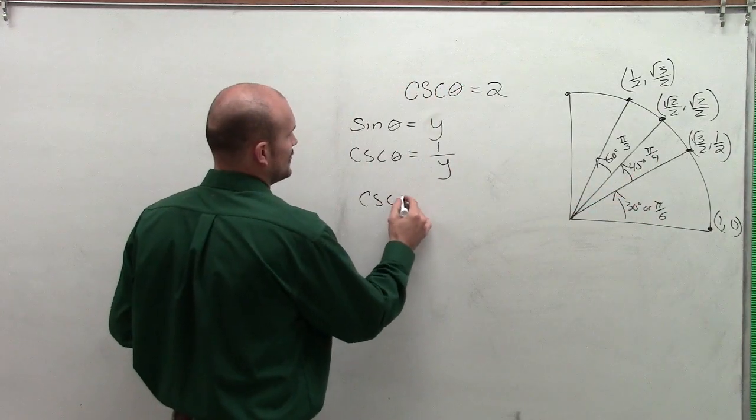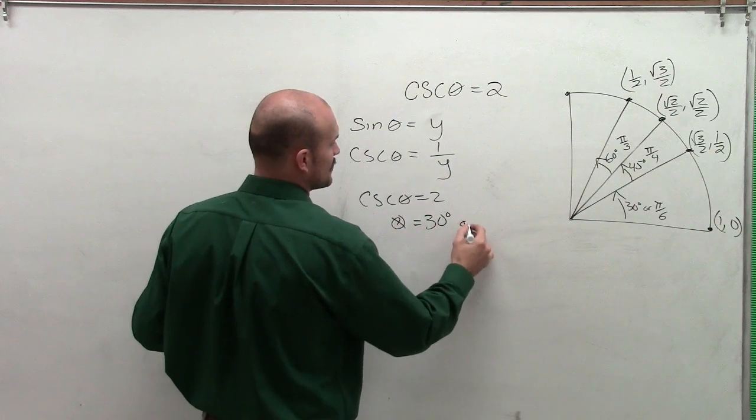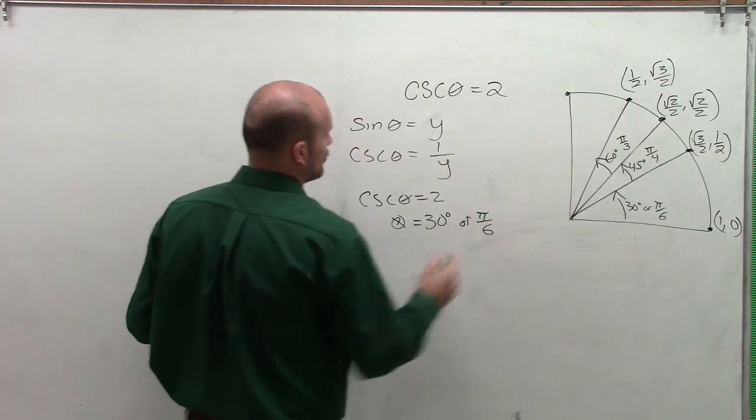Therefore, when I say the cosecant of theta equals 2, we can now say theta is going to equal either 30 degrees or pi over 6.